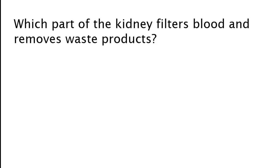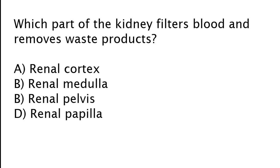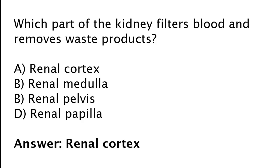Which part of the kidney filters blood and removes waste products? Renal cortex, renal medulla, renal pelvis, or renal papilla? The correct answer is option A. The renal cortex is the part of the kidney which filters blood and removes waste products.